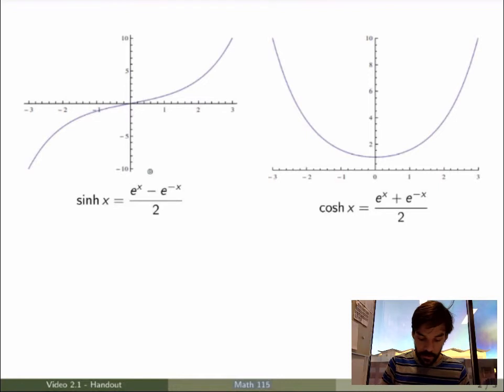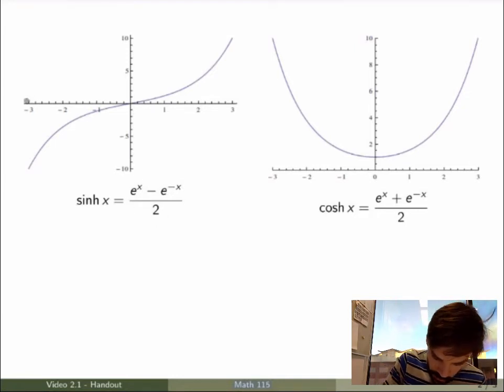So here's the graph of the hyperbolic sine function and the graph of the hyperbolic cosine function. So I'll explain to you how you get the graph of the hyperbolic sine. This is really the sum of two terms, so let's just look at the first term. First term is exponential of x over 2, so its graph would be something like that.